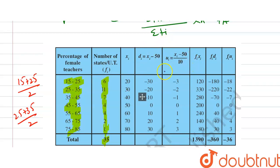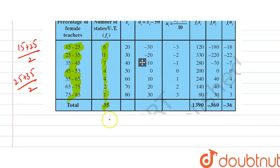Now we multiply FI by XI: 6×20=120, 11×30=330, 7×40=280, 4×50=200, and so on. The sum of all FI×XI is 1390 and the total frequency is 35. So by the direct method, mean = 1390/35 = 39.71.